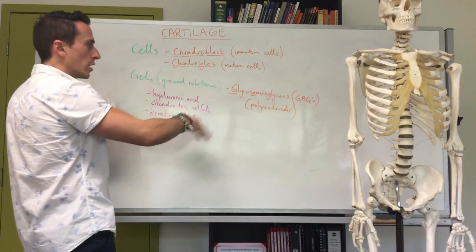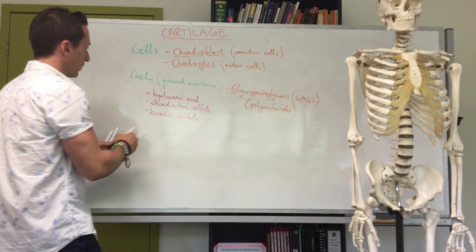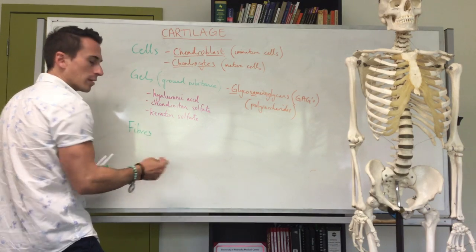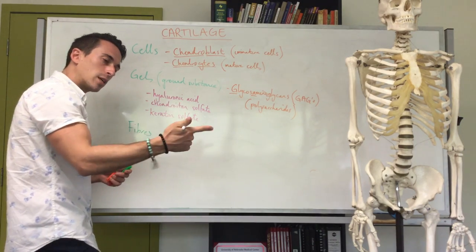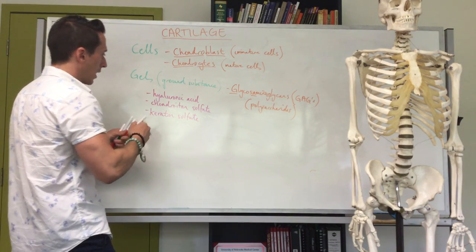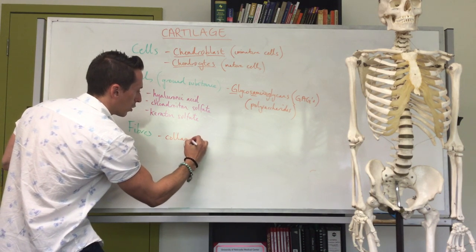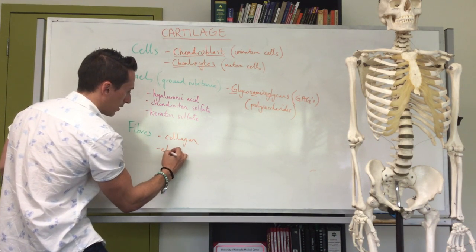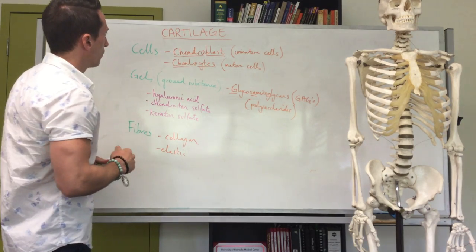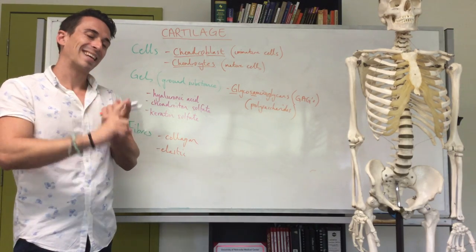There are three fiber types for connective tissue: elastic fibers, reticular fibers, and collagen fibers. The types found in cartilage include collagen fibers and elastic fibers. So generally speaking, cartilage is a semi-solid connective tissue that allows the body to withstand certain compressive or tensile forces.